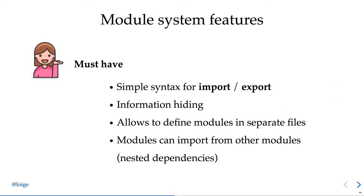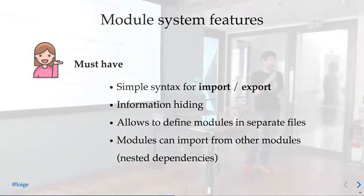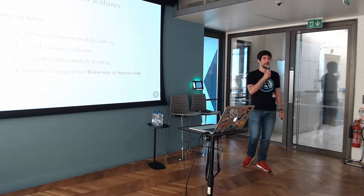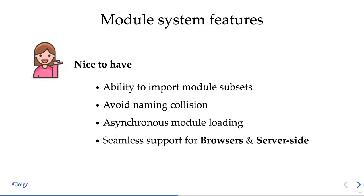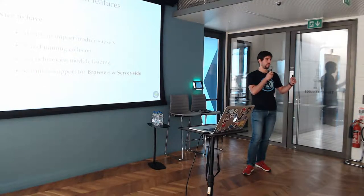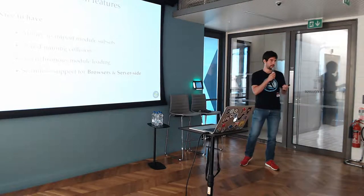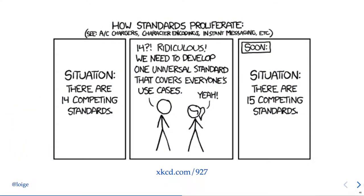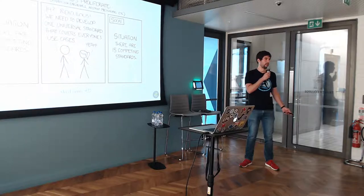This is our module implementation, but it's not guaranteed everyone will do the same thing. When creating a reusable module we need a standard. My ideal module system would have: simple syntax for import and export, information hiding, modules defined in separate files, and the ability to import other modules. Nice-to-haves: import only a subset of a module, avoid naming collisions, asynchronous module loading, and seamless compatibility across browsers and server-side Node.js. But as with standards, everyone thinks existing ones aren't good enough, so you end up with one more competing standard.